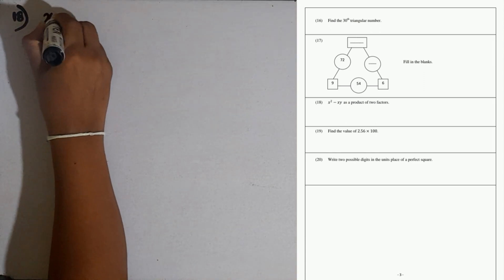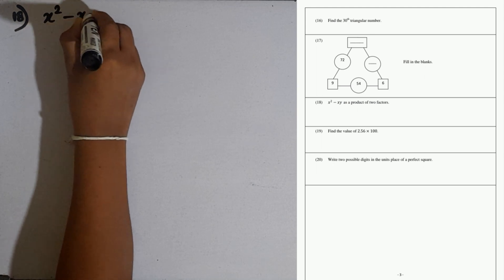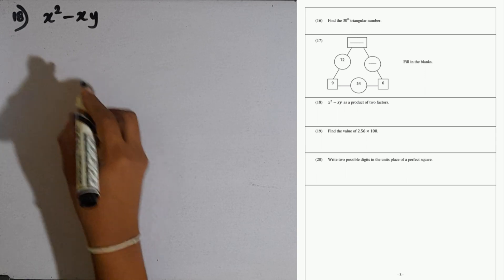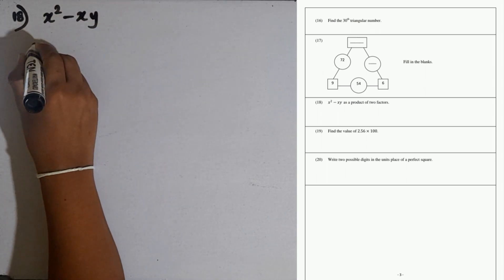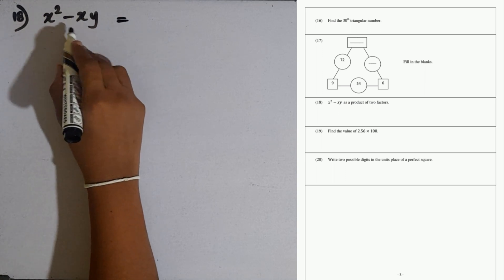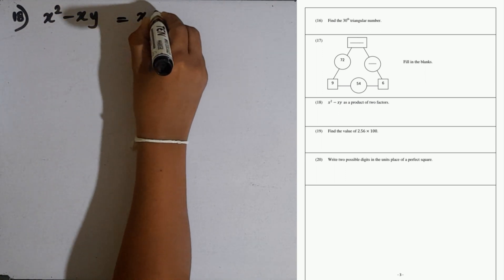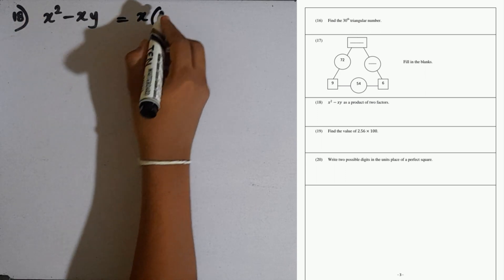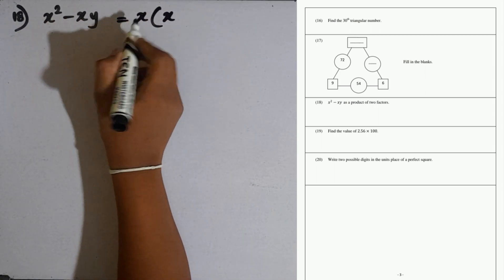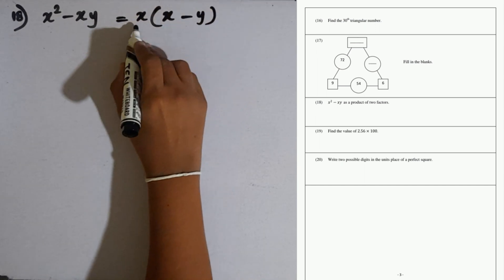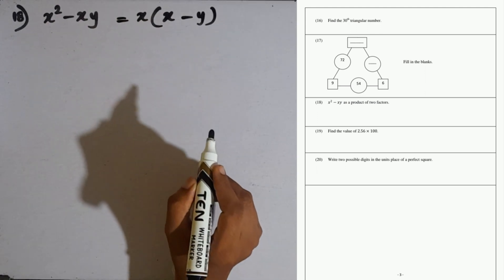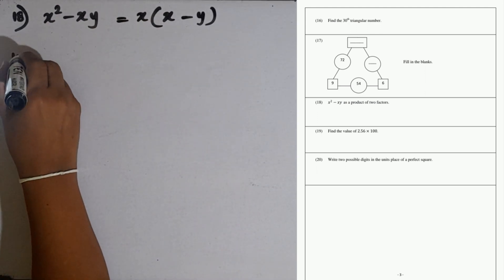Question number 18: x squared minus xy. Write this as a product of two factors. We can take the common factor x. x can be taken out, so x squared divided by x is x, then x minus xy divided by x is minus y. This is the answer, these two factors here.